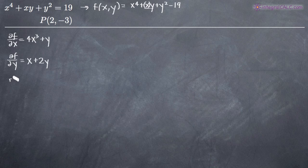Now the gradient vector is denoted by this upside down triangle as f of f of xy and it's just the two partial derivatives. So first the partial derivative with respect to x which is 4x cubed plus y comma partial derivative with respect to y so x plus 2y.